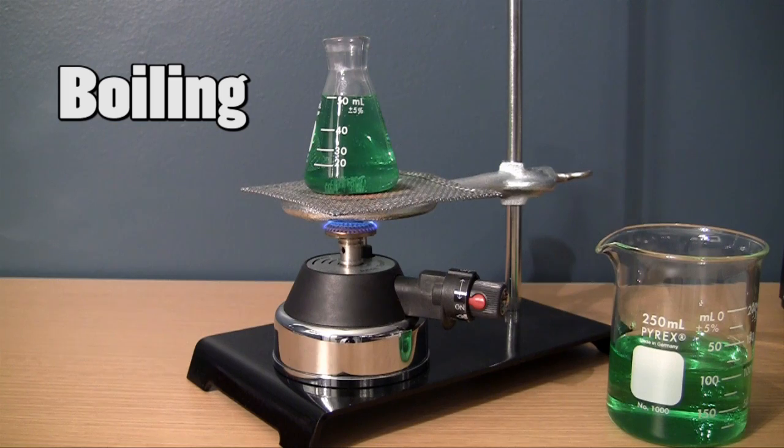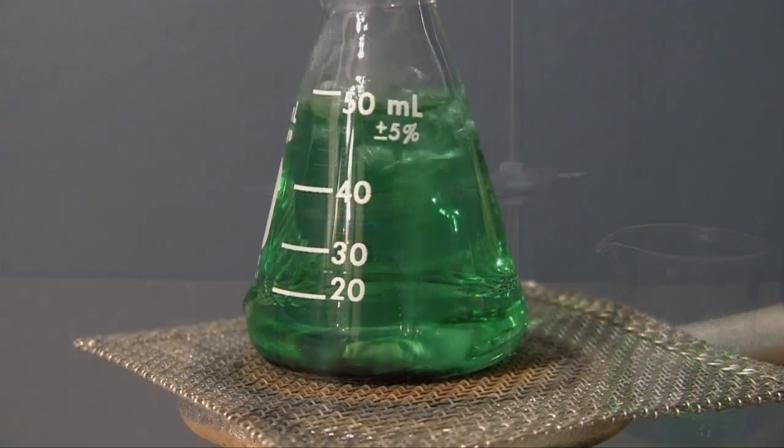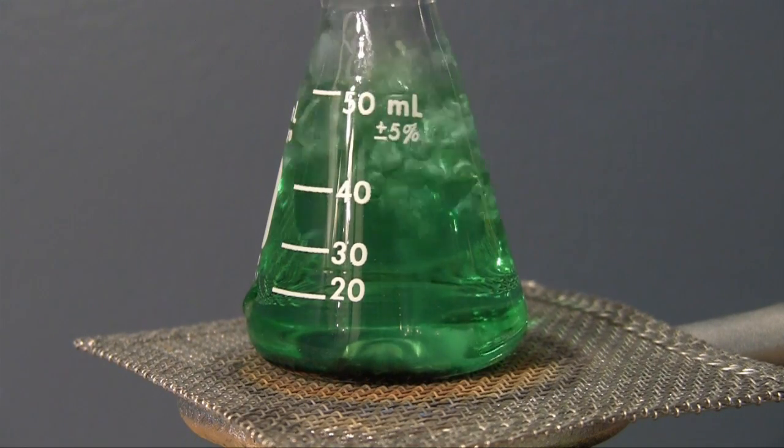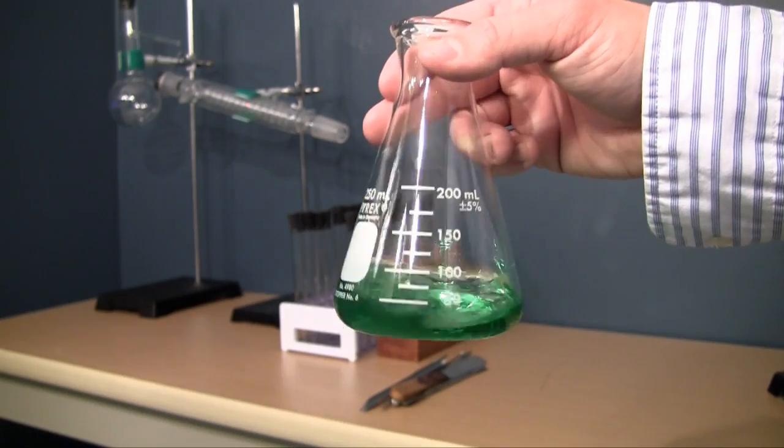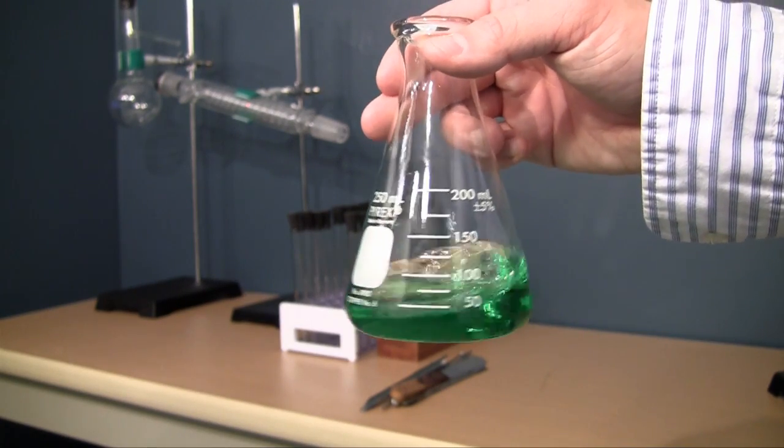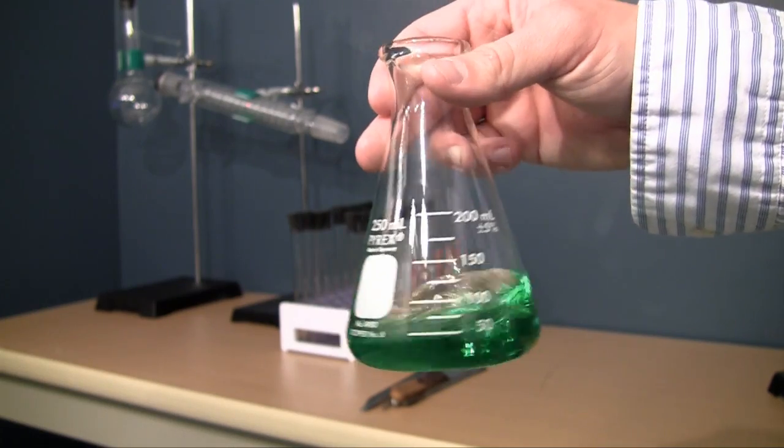Now the reason that you may prefer to use an Erlenmeyer flask rather than a beaker in certain experiments is because first of all, it makes it really easy to swirl solutions. If you try to swirl solution with a beaker it's probably gonna get all over the place, but in an Erlenmeyer flask it's really easy.